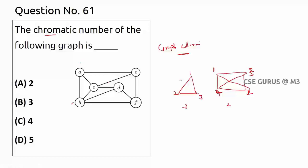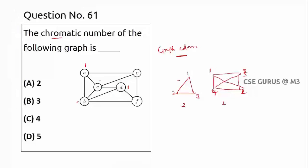Now solving Q61: giving color one here, adjacent vertices cannot have one, so only two options remain. Assigning two next, then three — we are using only three colors. Can we use fewer than three? No. So the chromatic number is three only, and for our graph the answer is option B.